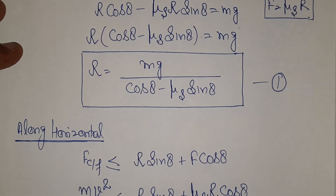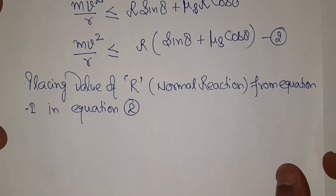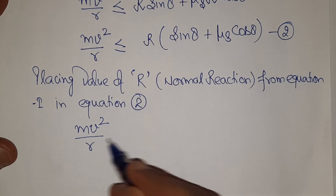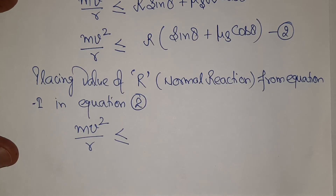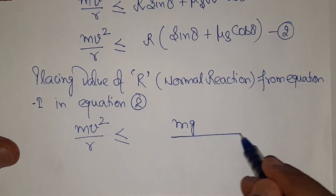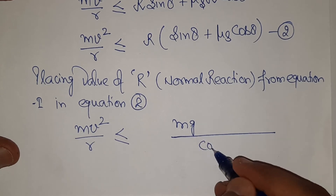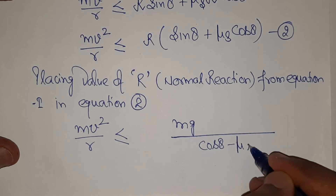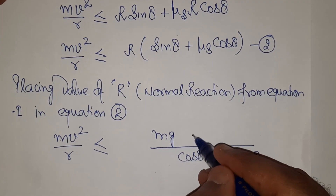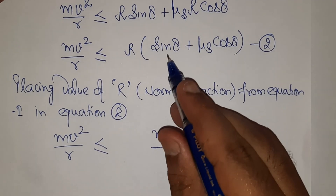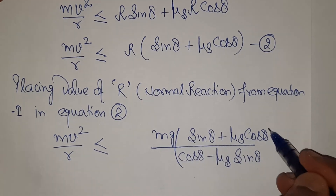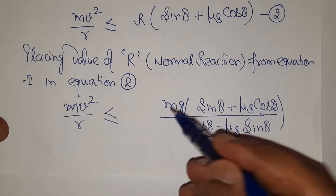Now placing the value of R from Equation 1 into Equation 2: mv²/r ≤ [mg/(cosθ − μs·sinθ)] · (sinθ + μs·cosθ). Mass cancels, giving v²/r ≤ g(sinθ + μs·cosθ)/(cosθ − μs·sinθ).